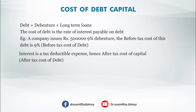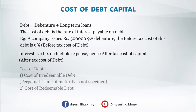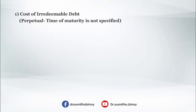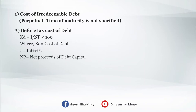Interest is a tax-deductible expense, so we need to consider the after-tax cost of capital. We have to find both the before-tax cost of debt and the after-tax cost of debt. The cost of debt has mainly two types: first, the cost of irredeemable debt, and second, the cost of redeemable debt. Irredeemable debt is perpetual debt — the time of maturity is not specified. In this video we will concentrate only on the cost of irredeemable debt.